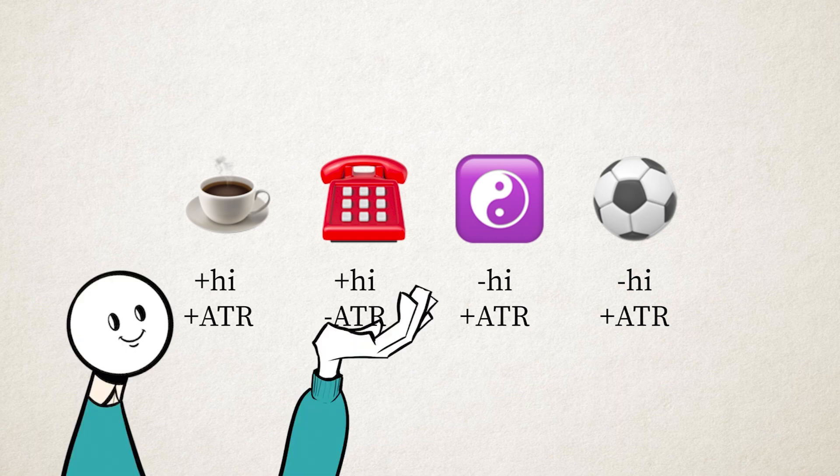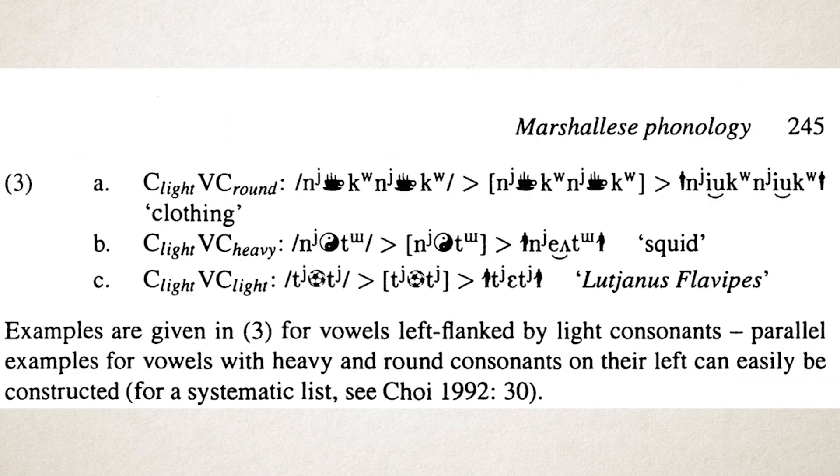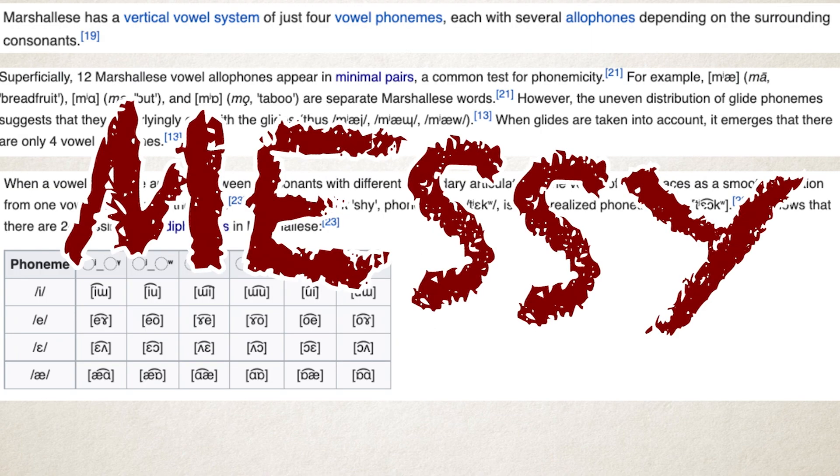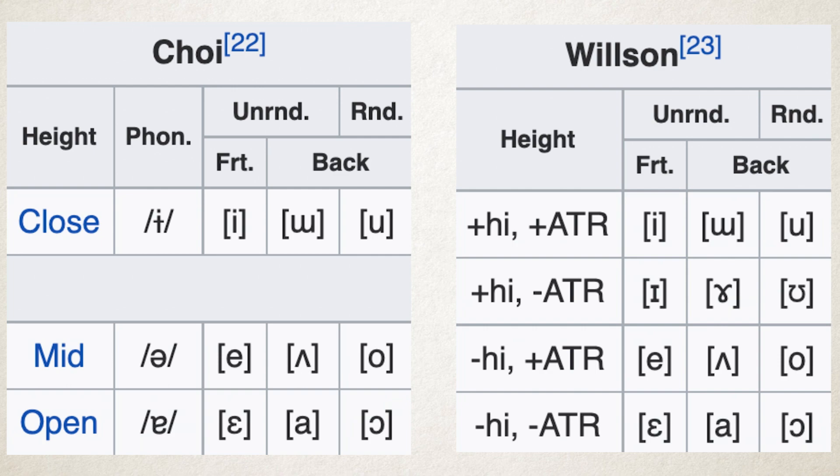Now, this doesn't mean you should just replace all phonemes in your language or conlang with emojis. That's dumb. It's only funny when Hale does it, because Marshallese vowels are messy. And at the time, nobody could agree what they were.